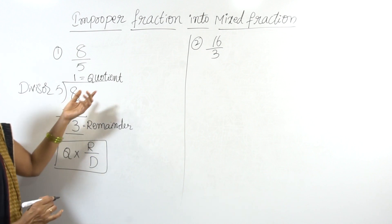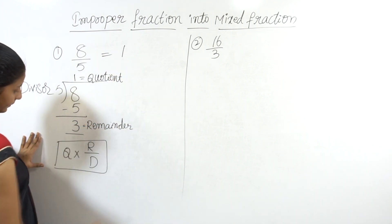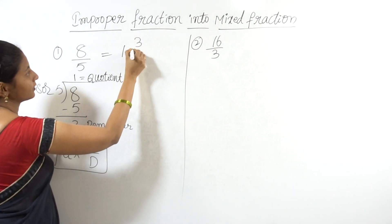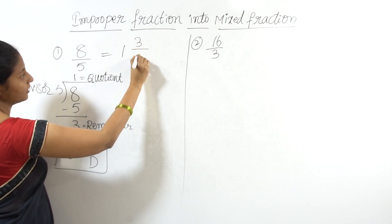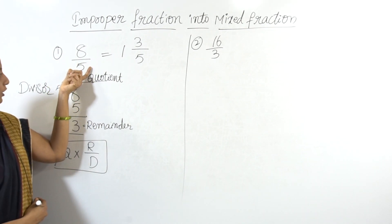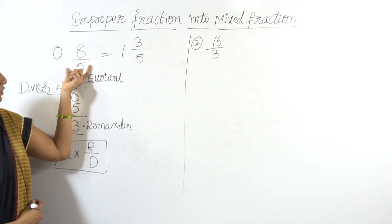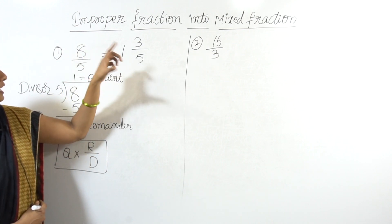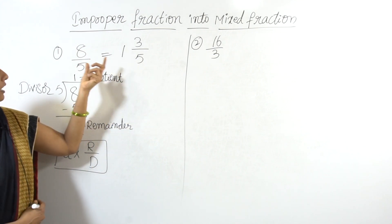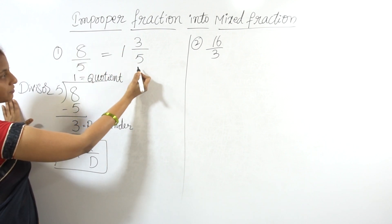So the quotient is 1, the remainder is 3, and the divisor is 5. If we have a denominator in the improper fraction, we also have the same denominator in the mixed fraction. So 8 by 5 as a mixed fraction is 1 and 3 by 5.